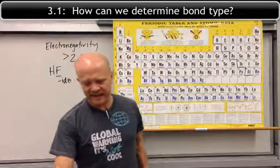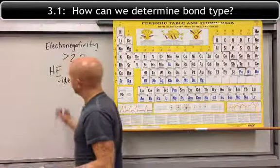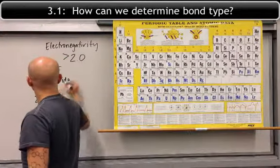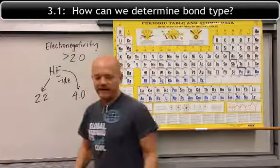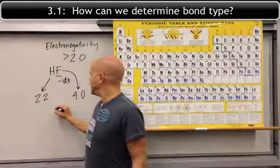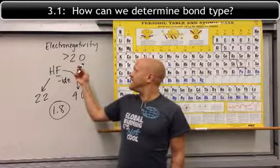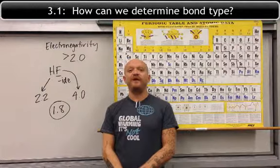We're going to check it out. I'm going to look at the electronegativity values for hydrogen. Hydrogen is 2.2, and fluorine is 4.0. That difference is 1.8. Since it is less than 2.0, this bond is considered covalent.